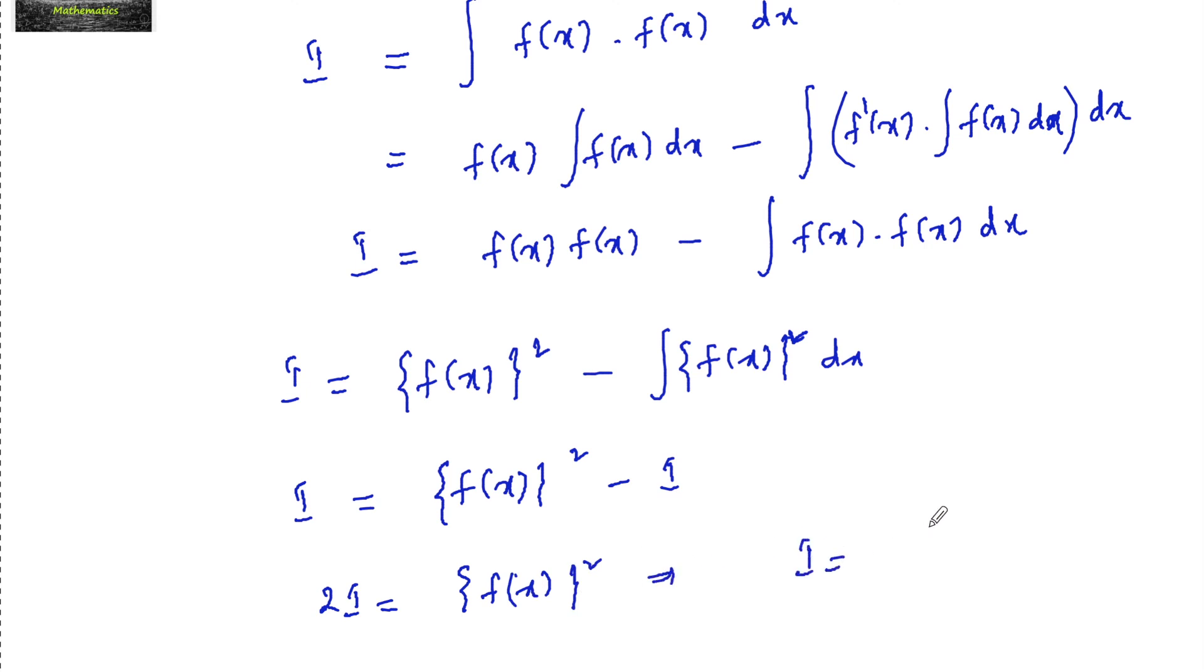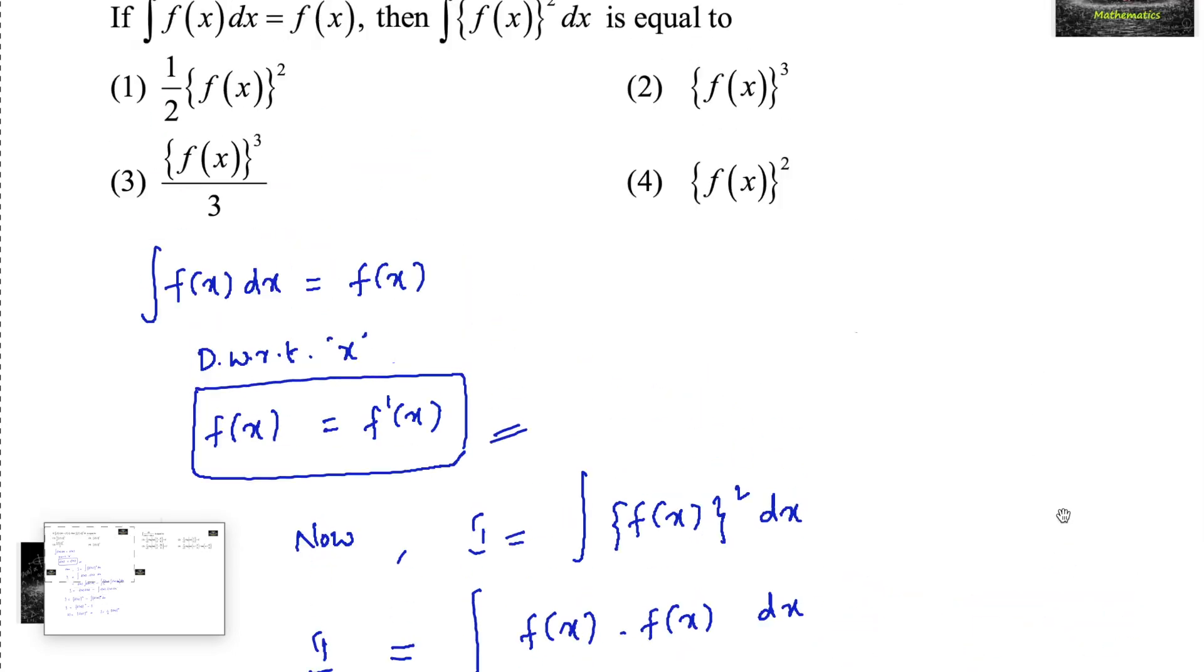So our integral i is equal to one upon two times f whole square. So this is option 1.